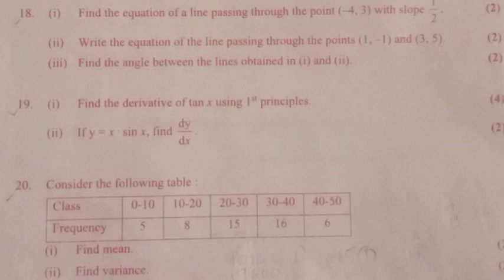Question 18: 1. Find the equation of a line passing through the point (−4, 3) with slope 1/2. 2. Write the equation of the line passing through the points (1, −1) and (3, 5). 3. Find the angle between the lines obtained in 1 and 2. Answer 1: (x₁, y₁) = (−4, 3), m = 1/2.